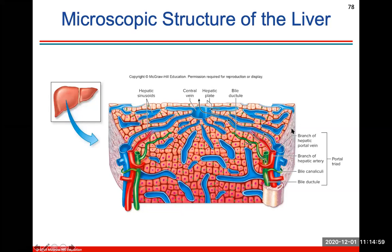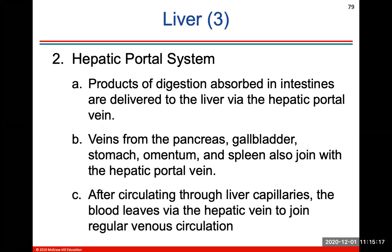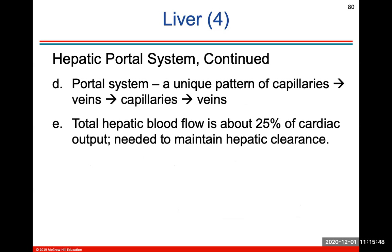Here's a look at the microscopic structure of the liver. The portal triad is made up of a hepatic portal vein, hepatic artery, bile canaliculi, and bile ductile. Your liver functions to detoxify the blood as well as create bile to help digest fats. Products of digestion are absorbed in your intestines and delivered to the liver via the hepatic portal vein. The veins from the pancreas, gallbladder, stomach, omentum, and spleen also join the hepatic portal vein. After circulating through the liver capillaries, blood will leave via the hepatic vein to join regular venous circulation. Total hepatic blood flow is about 25% of cardiac output.